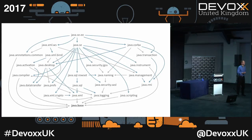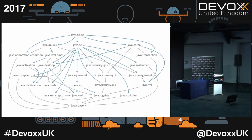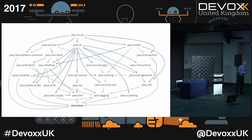Question about the color coding of arrows in the module graph: a blue arrow means there's an API dependence — for example, java.sql exports packages whose types mention types in java.logging. The gray arrows are either a pure implementation dependence or an arrow into java.base, since everything depends on java.base and it would be boring to make all those arrows blue.